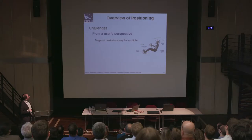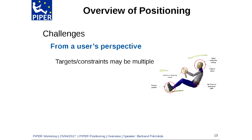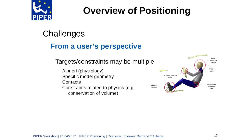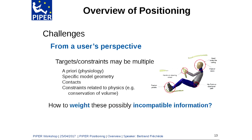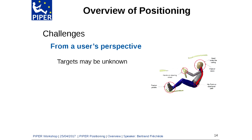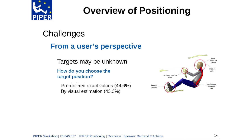From a user's perspective, you have to deal with multiple constraints and targets together, which include a priori knowledge, physiology, geometry specific to a given model, contact constraints, and physics. The difficulty is knowing how to weight this possibly incompatible information. Also, targets may be unknown — for example with the spine, you may know the head orientation and the H-point location, but how do you choose target positions for the curvatures?